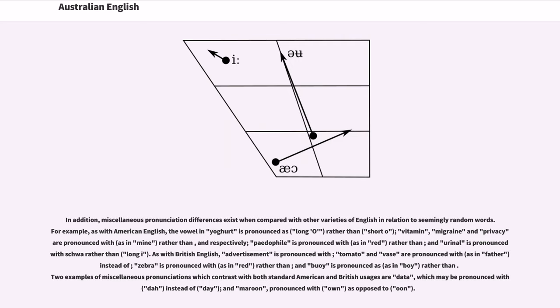Two examples of miscellaneous pronunciations which contrast with both standard American and British usages are data, which may be pronounced with /dæ/ instead of /deɪ/, and maroon, pronounced with /əʊ/ as opposed to /uː/.